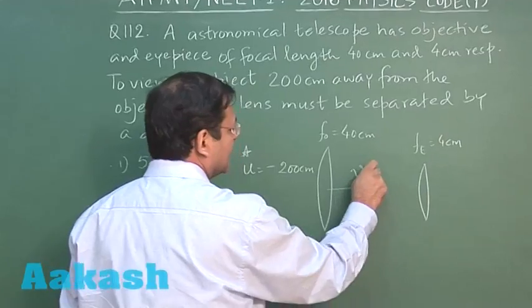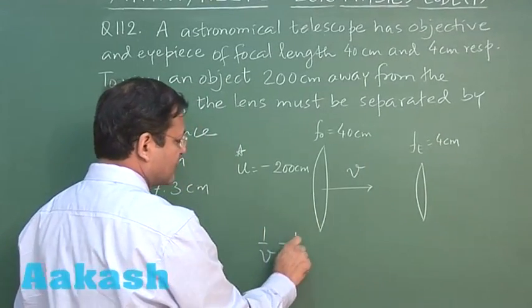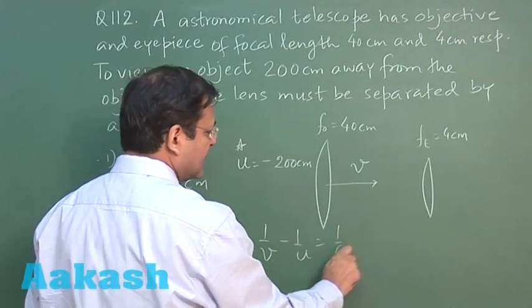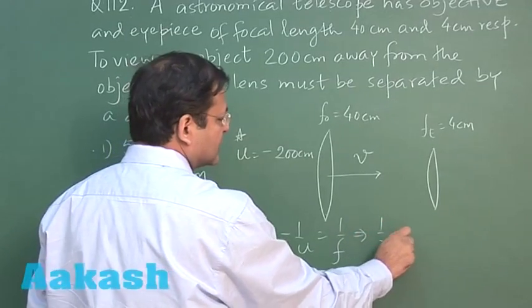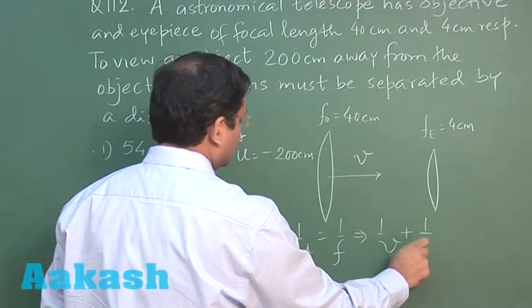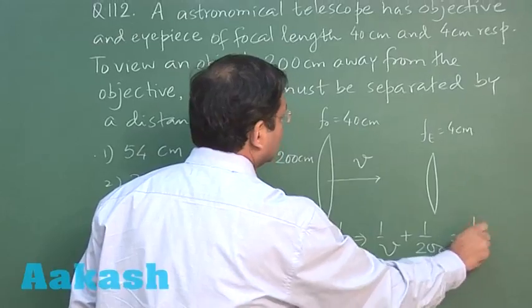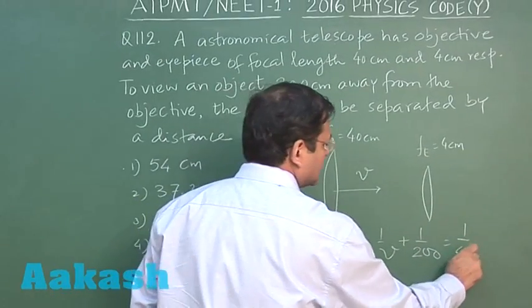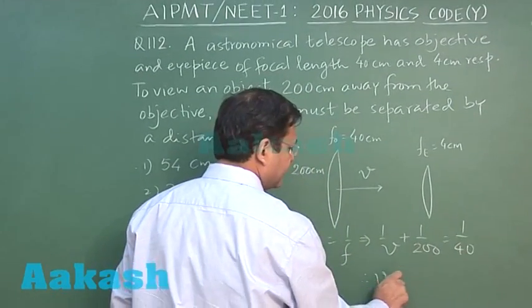So first you calculate what is v using the formula 1 by v minus 1 by u is equal to 1 by f. If you substitute the values, this is 1 by v plus 1 by 200 is equal to 1 by 40. So v will be coming out to be 50 centimeter.